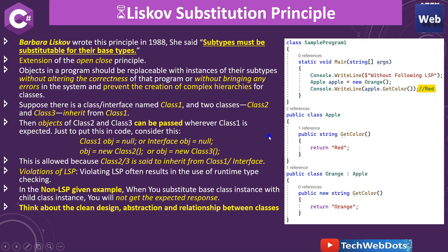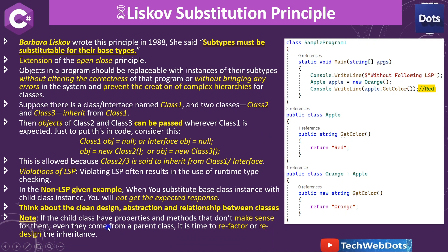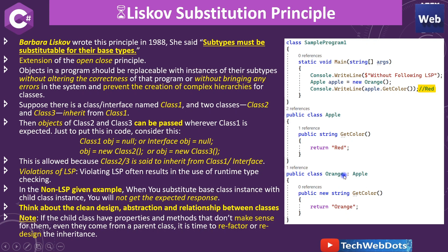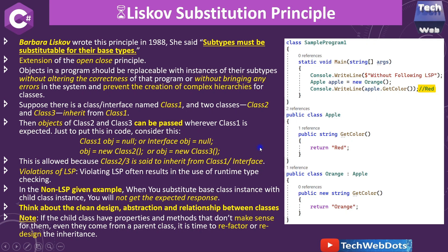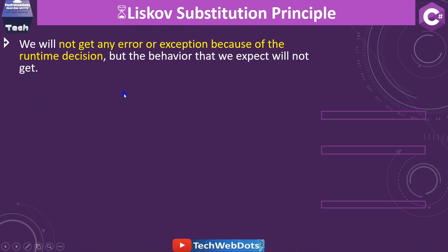Think about clean design, clean abstraction, and the relationship between classes — this inheritance is actually violating the LSP rule. If the child class has properties and methods that don't make sense for it, even if they come from the parent class, it's time to refactor and redesign the inheritance. In this case, inheriting the features of Apple in Orange is not the correct relationship.